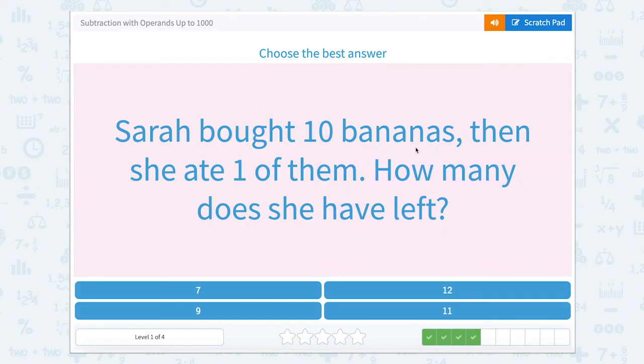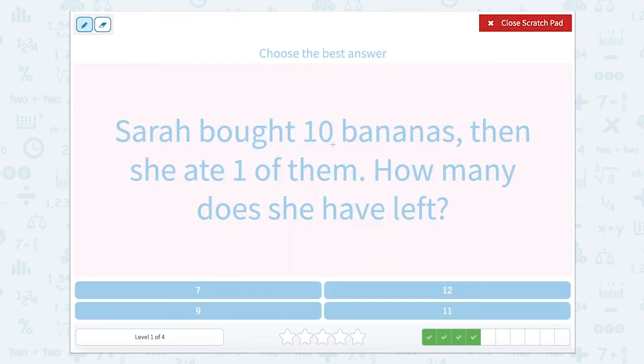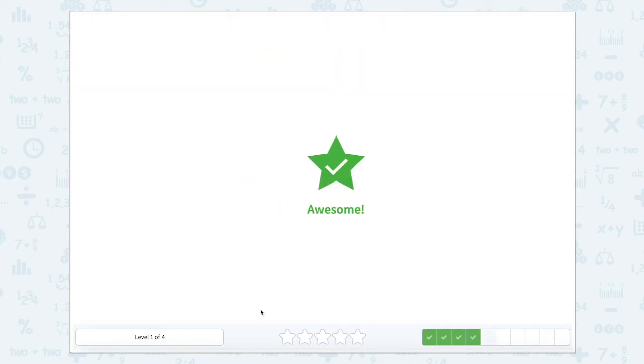Sarah bought 10 bananas. Then she ate one of them. How many does she have left? So Sarah has 10 bananas. She ate one, which means she got rid of one. And how many does she have left? 10 minus one is nine. She has nine bananas left.